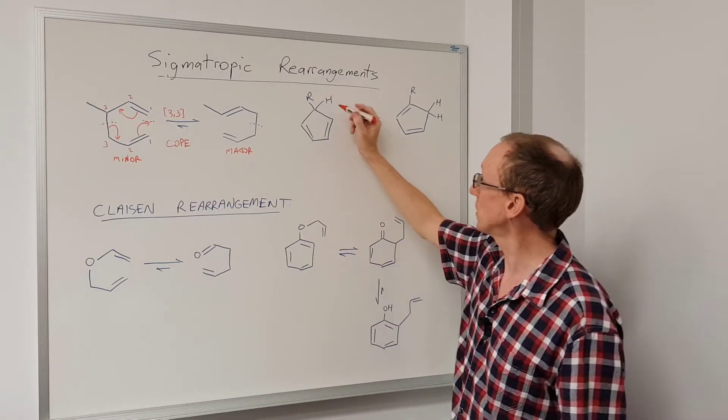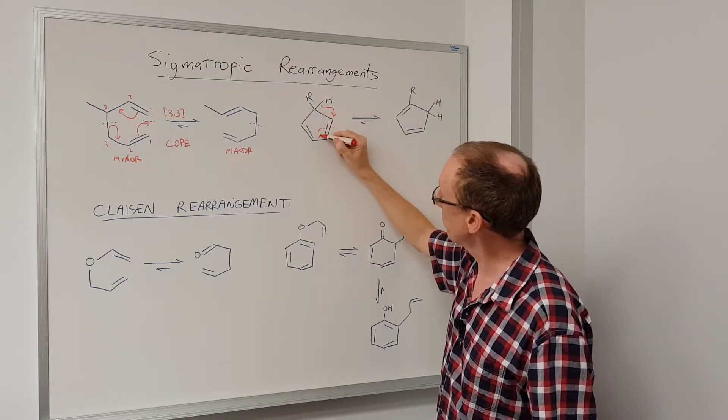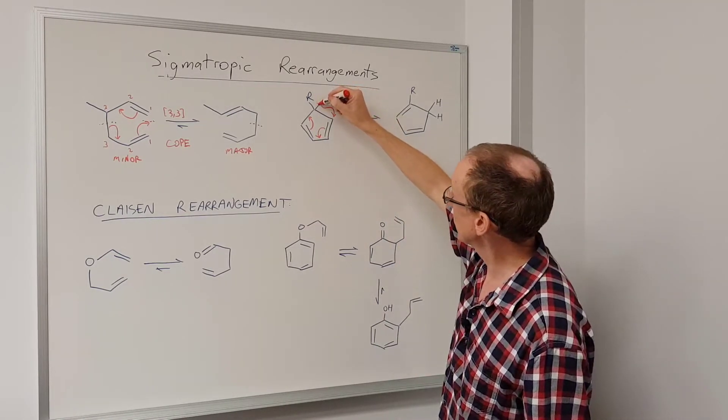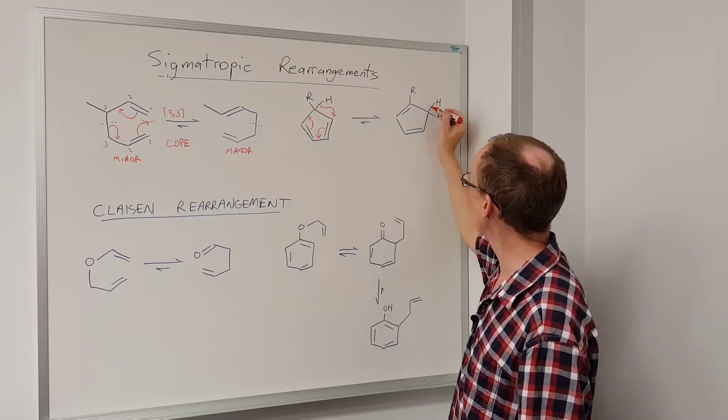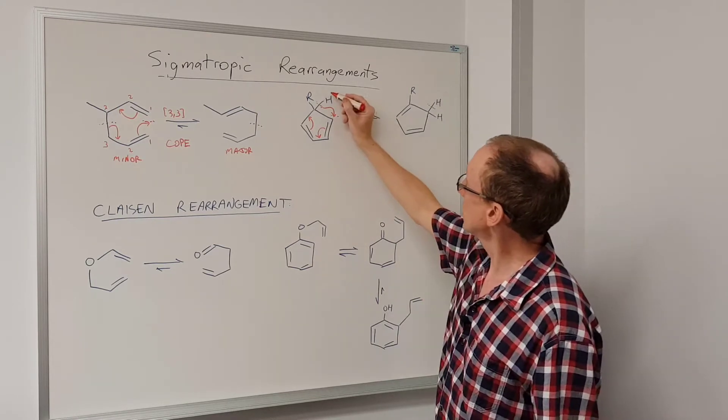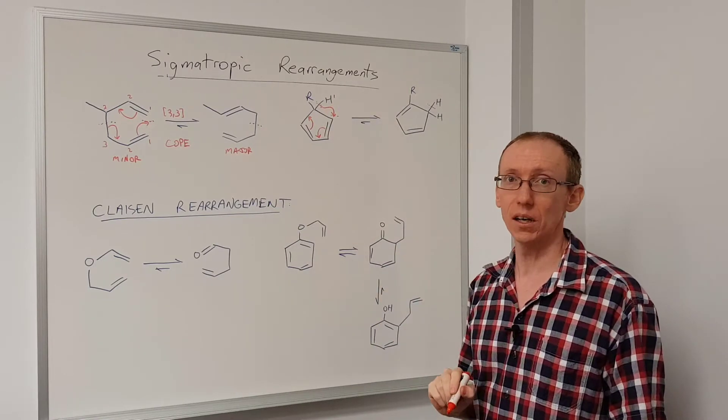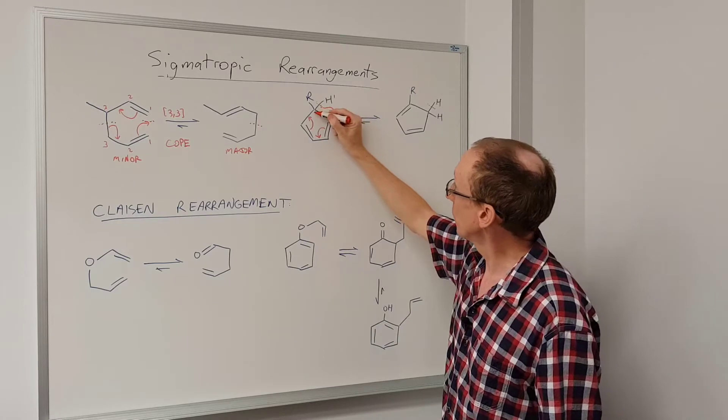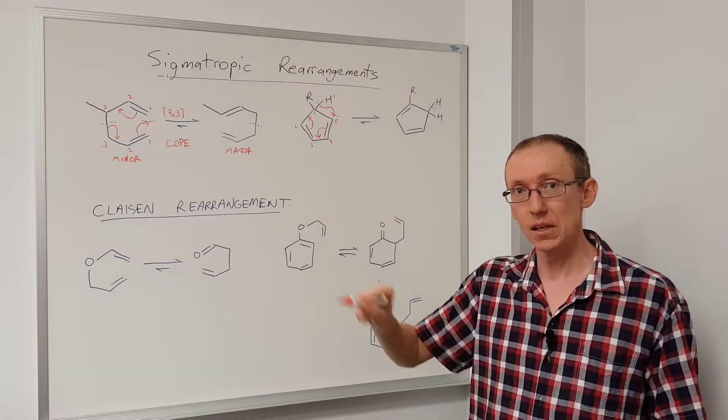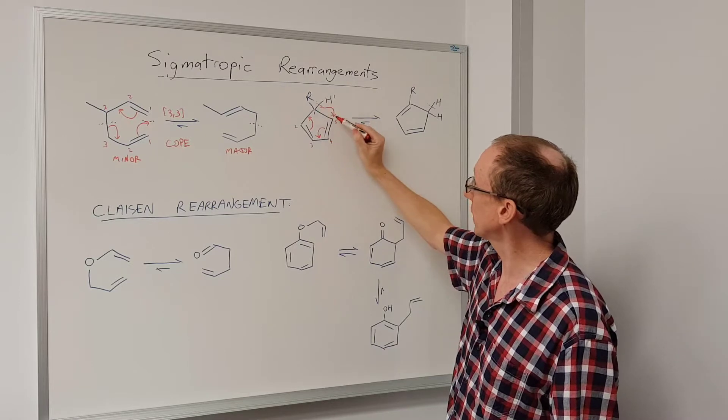Let's look at this example here. Once again, curly arrows show this hydride migrating, move these pi electrons around the ring, and we get to our product. Once again, there's the sigma bond that's breaking, here's the sigma bond that is forming. On one side, the group that is migrating is only one atom in size, whereas on the other side we've got one, two, three, four, five contiguous atoms that are forming up the chain that is involved in the sigma bond that's breaking and the sigma bond that's forming.